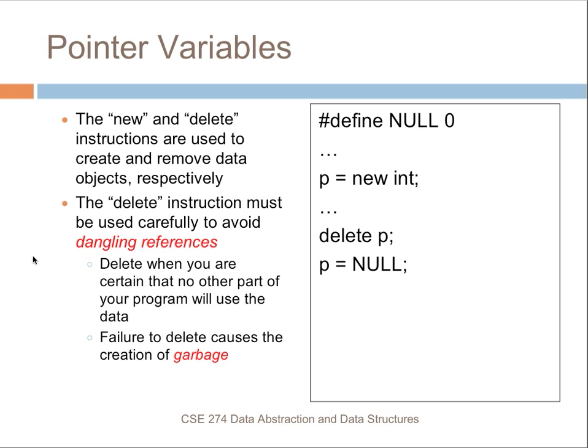The new and delete instructions are used in C++ to create and remove data objects respectively. In Java we have a garbage collector that automatically looks for memory that's no longer being used and frees that memory. In C++, we as programmers are responsible for actually removing data when we're no longer using it — deleting memory that's been allocated — and we do this with the delete operation.